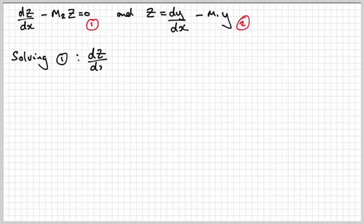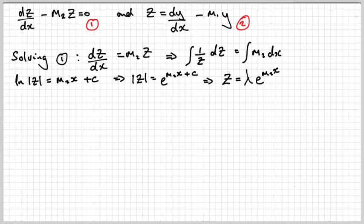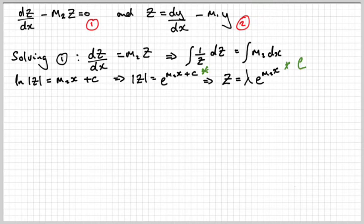We can solve the equation dz/dx minus m2·z = 0 directly by rearranging and separating variables — it's a very easy differential equation to solve. We get the modulus of z equal to e^(m2x + c), which we rewrite as z equals λe^(m2x). This is because e^(m2x + c) equals e^(m2x) times e^c, and we simply call e^c by the name λ.